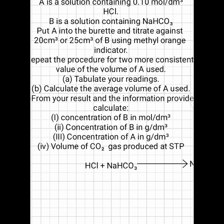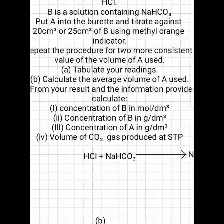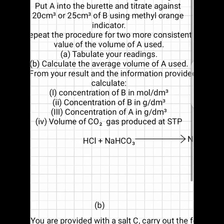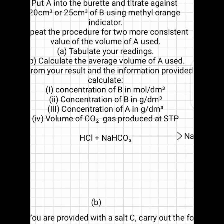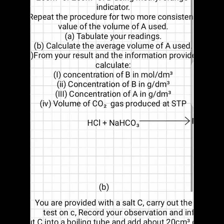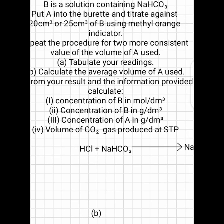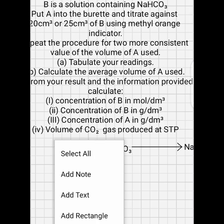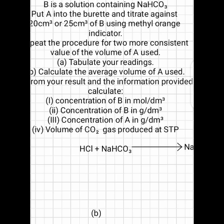Then from your results, you have to make these calculations. So which means after everything, we calculate the concentration of B in mol per dm cubed, concentration of B in gram per dm cubed, concentration of A in gram per dm cubed, and then the volume of CO2 gas produced at STP.